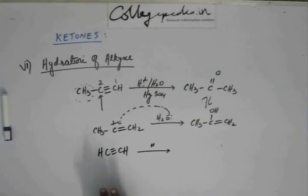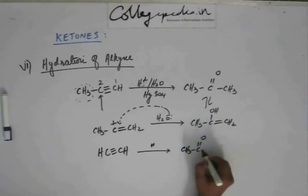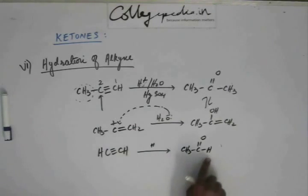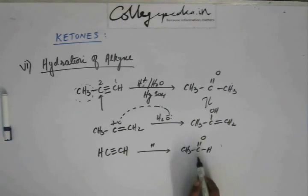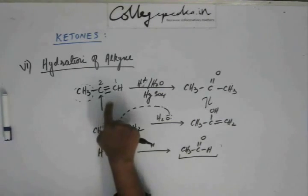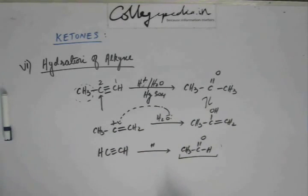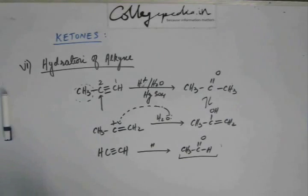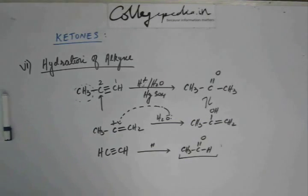All alkynes result in a ketone except ethyne. For ethyne there are only two carbons, both symmetric, so when C=O forms on one carbon, there is no other carbon on the other side — that results in an aldehyde. But for any higher alkyne with at least three carbons, the product is a ketone. So in general, hydration of alkynes gives ketones, with aldehyde only from ethyne.